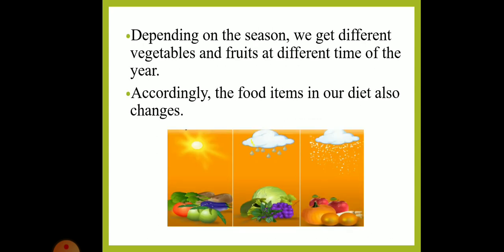We get different vegetables and fruits at different times of the year, because many vegetables and fruits are grown in a particular season. Accordingly, these vegetables and fruits are available in the market in different seasons, so the food items in our diet also change depending on the season.